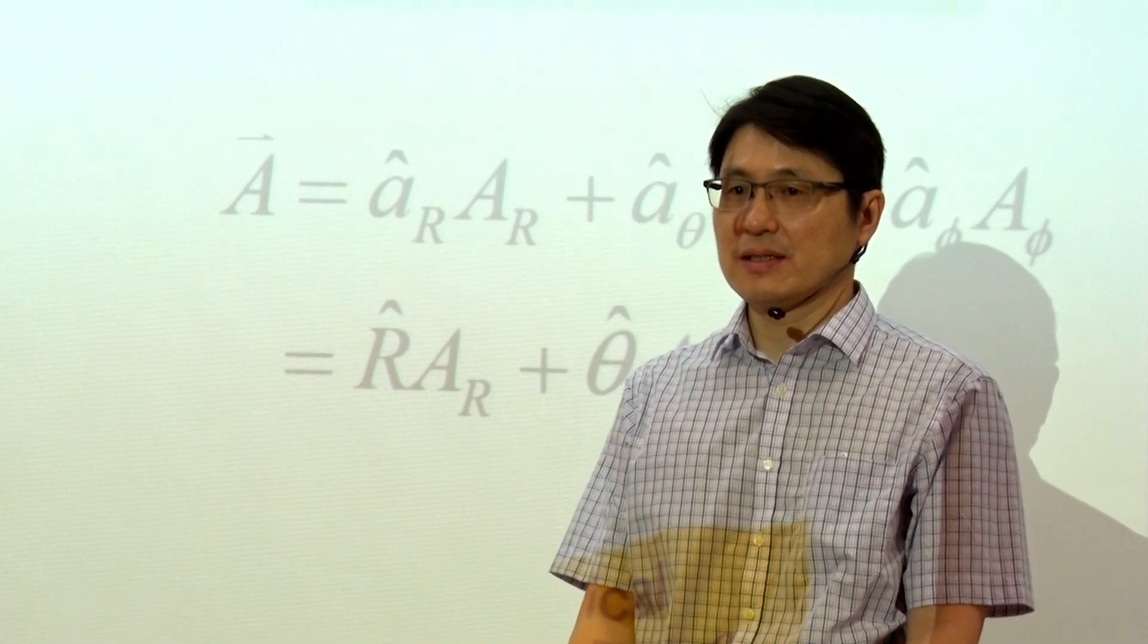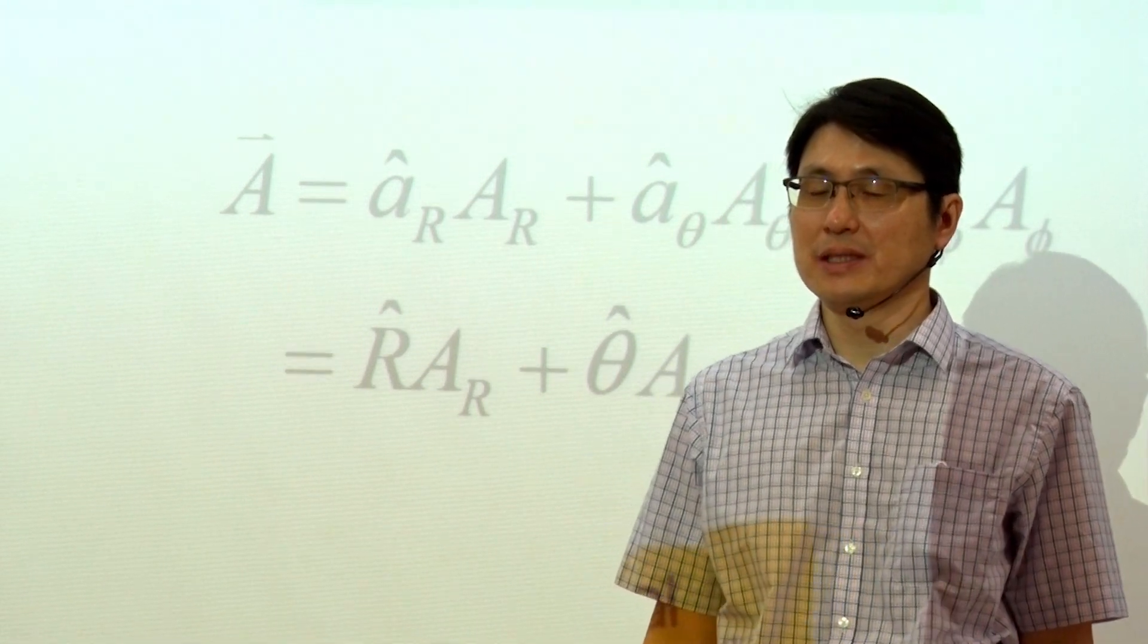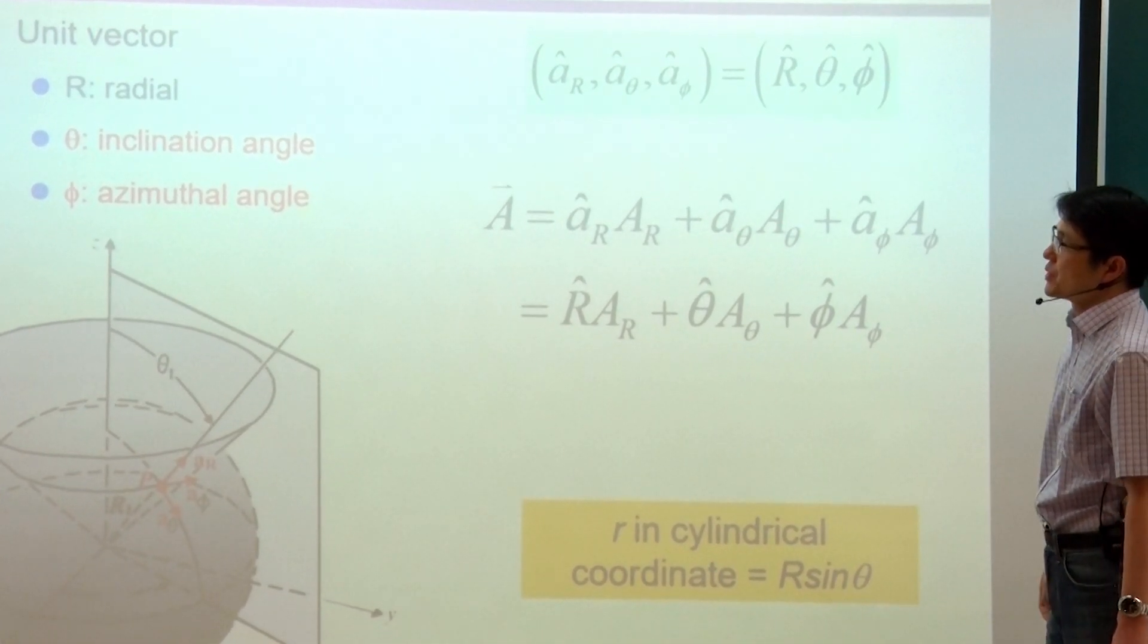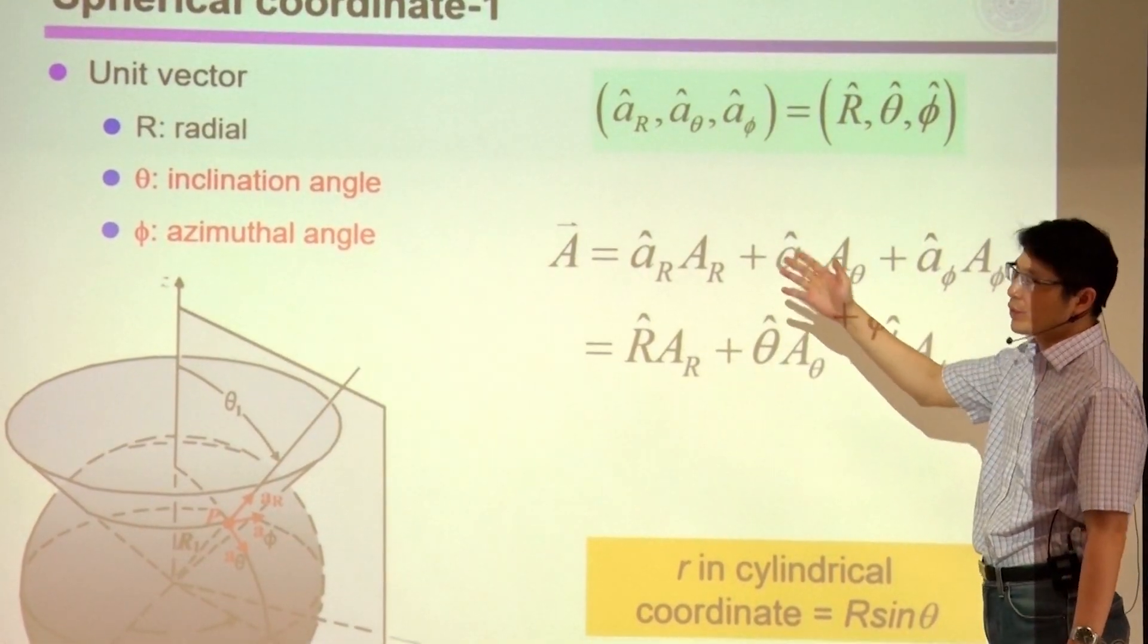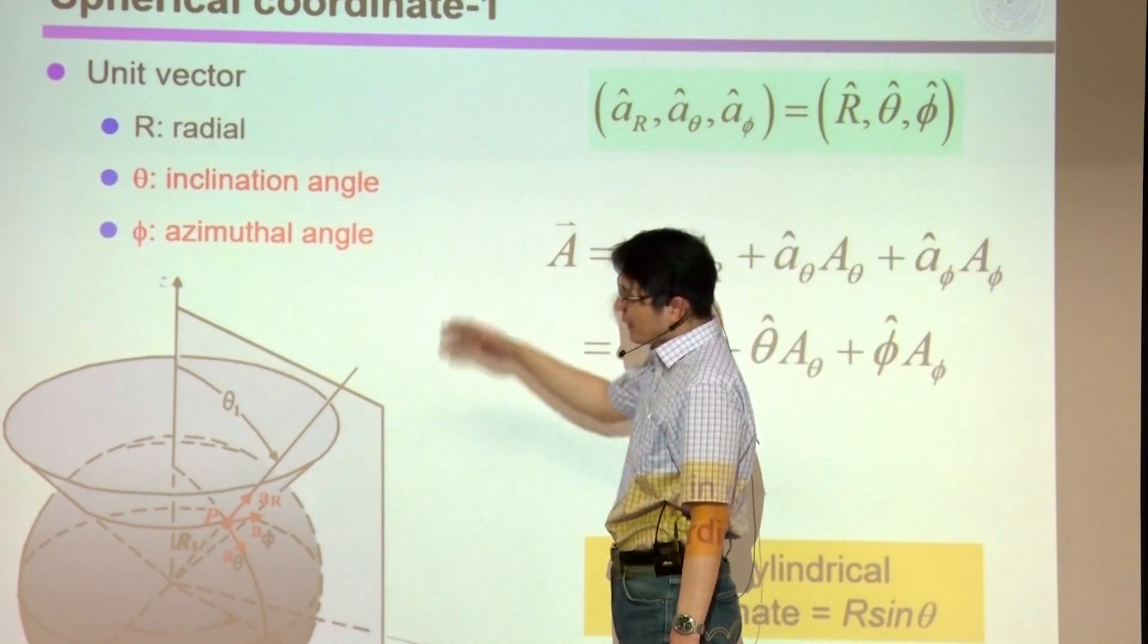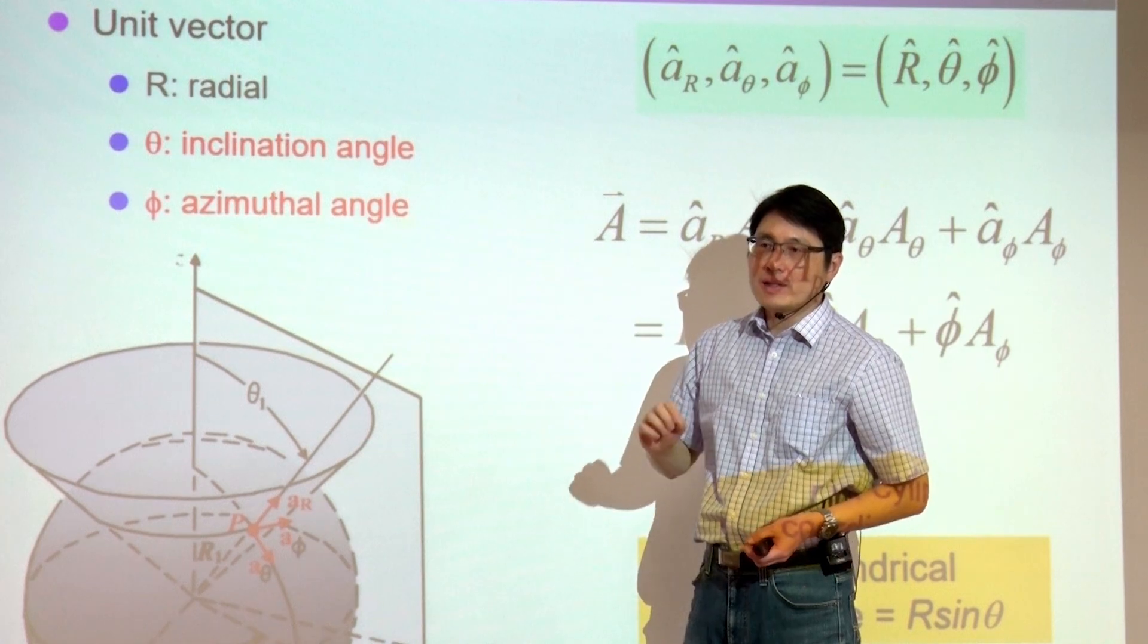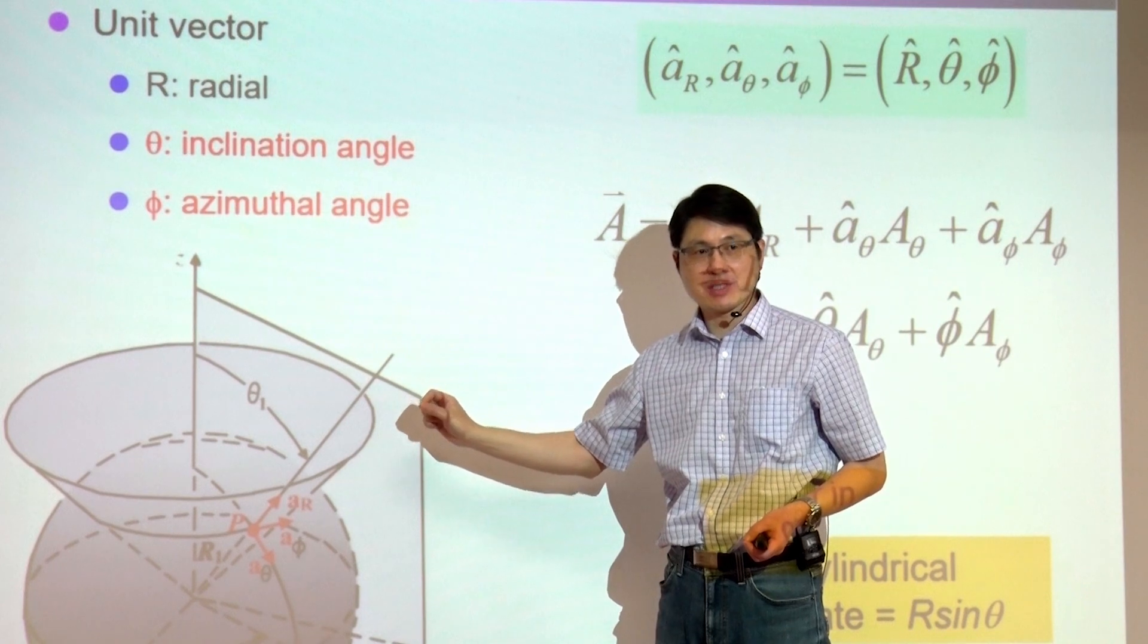Do you have questions regarding what I taught you for the last 50 minutes? If not, let's try to finish spherical coordinate. Usually students are having the most trouble, most problems with spherical coordinate. So by definition, as the name implies, if we have a spherical object, what is the easiest way to define a point on that spherical surface?